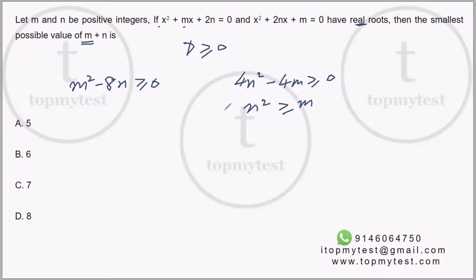Let's try to figure this out. What can be the possible? I want m and n to be as small as possible, and m and n are positive integers. So if I put n = 1, m should be greater than or equal to 8.